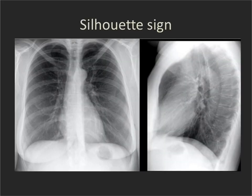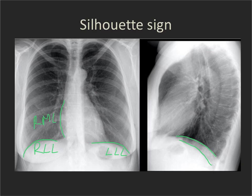Where we see the silhouette sign can help us identify what lobe the abnormality is in. If we lose the normal diaphragmatic silhouette on either side, that indicates an abnormality in the right or left lower lobe. Loss of the right heart border points to the right middle lobe. Loss of the left heart border points to the left upper lobe. Loss of the ascending aorta or the right paratracheal area indicates a right upper lobe process, and loss of the aortic notch is also a left upper lobe process.